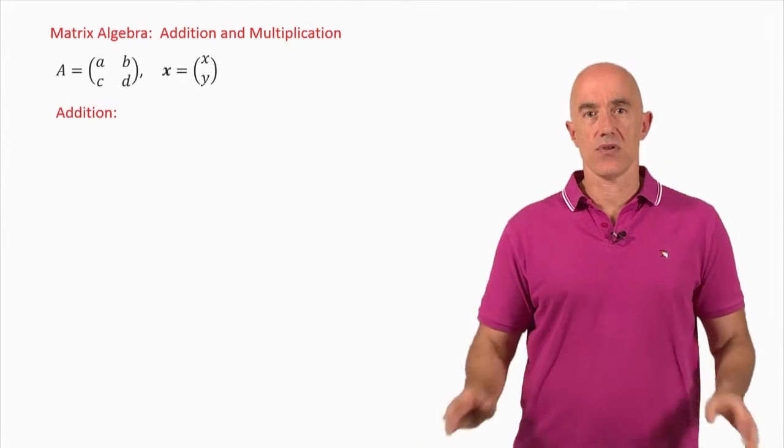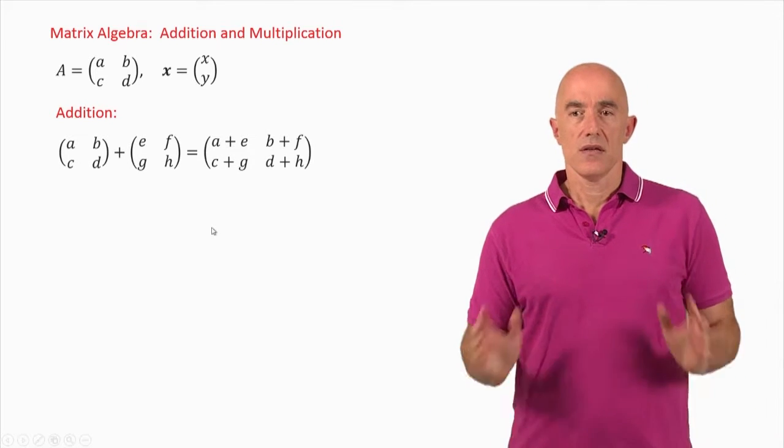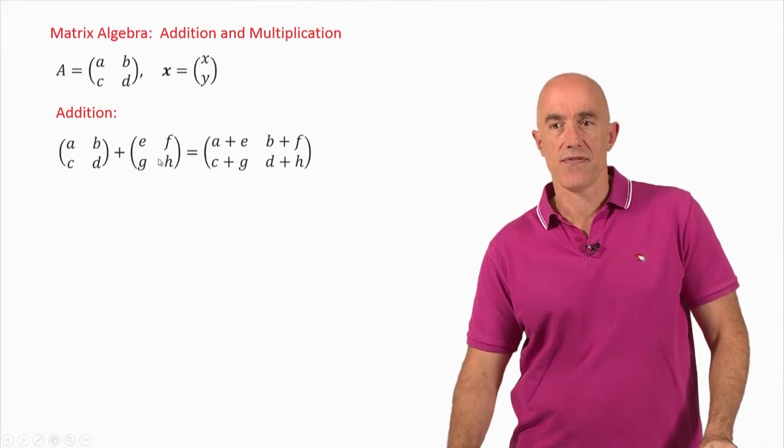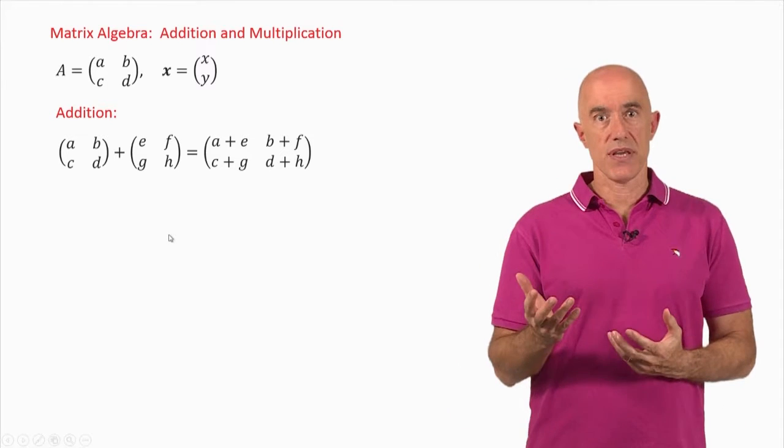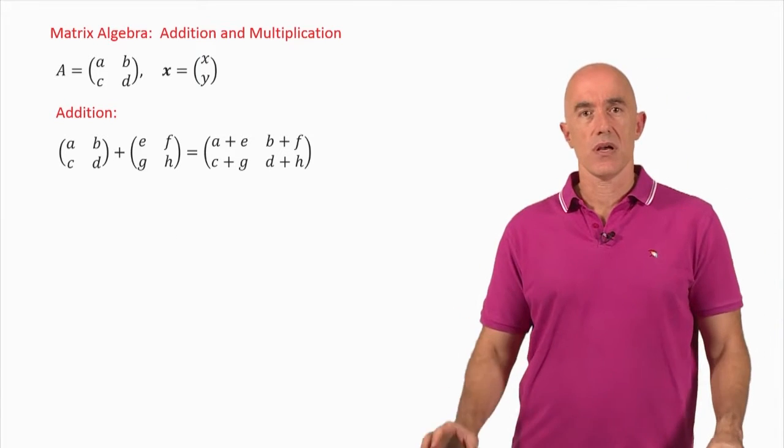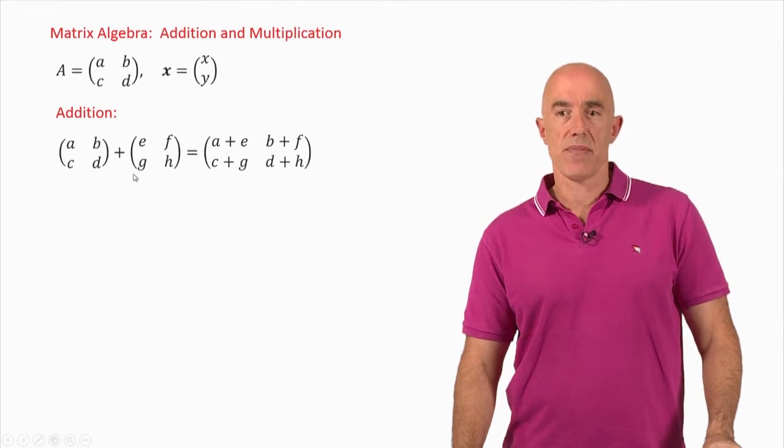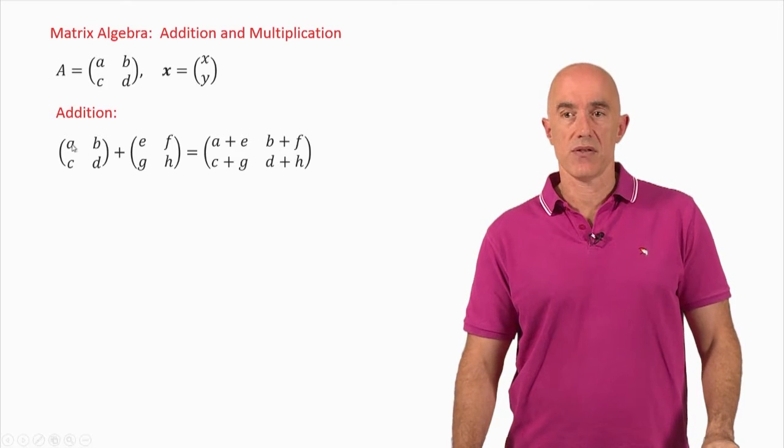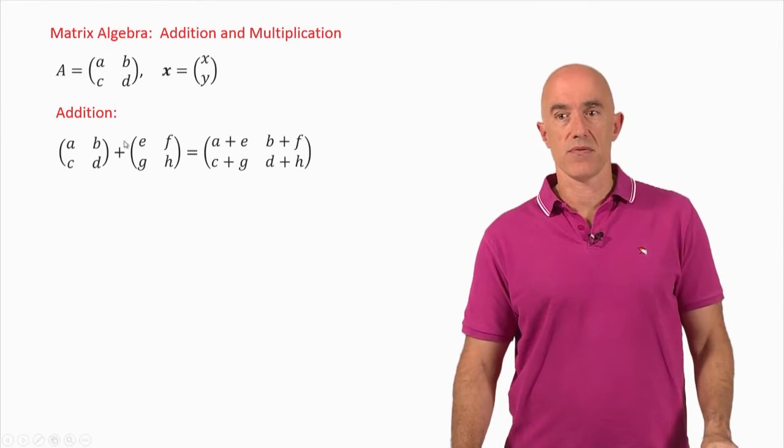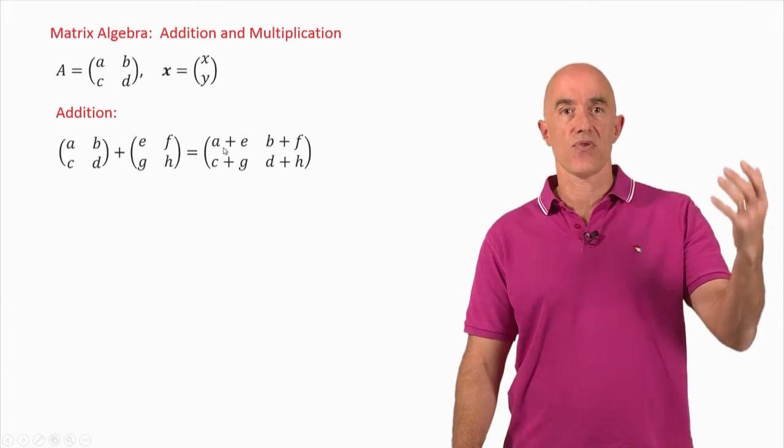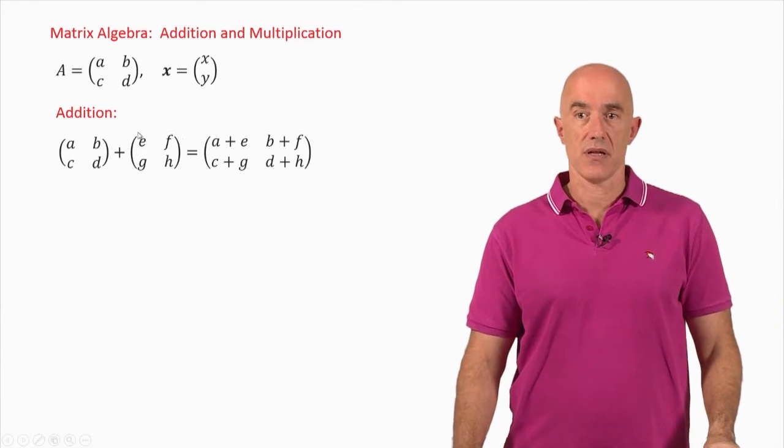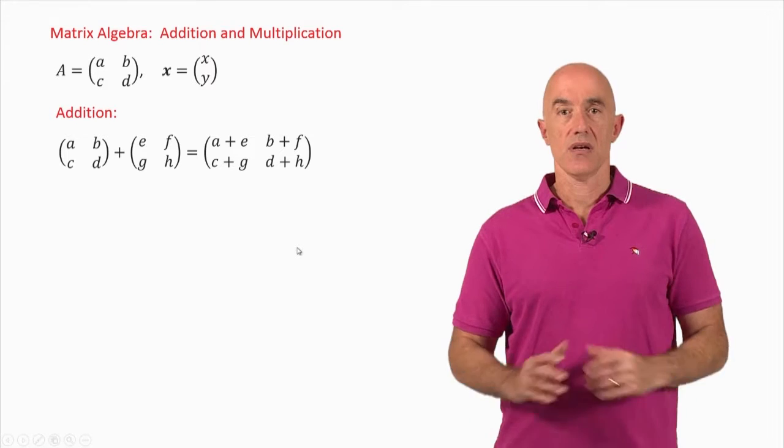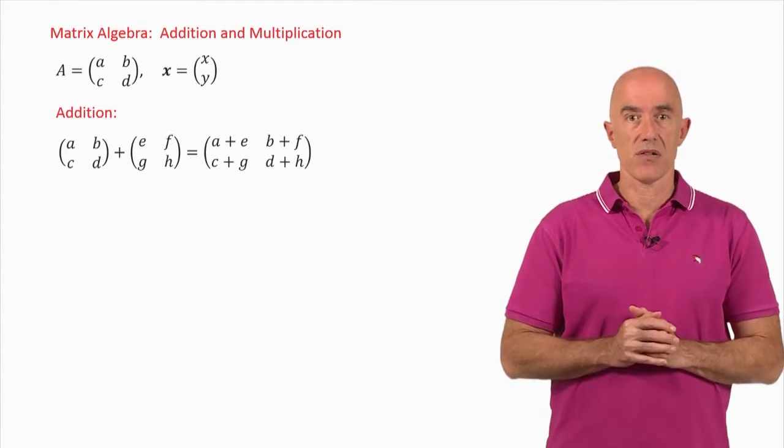So let's see how addition works. If we take two 2 by 2 matrices, A, B, C, D and E, F, G, H, and add them together, the result is very simple. It means you add element by element. In this first row, first column element, you add it to the first row, first column element: A plus E goes in the first row, first column. So A plus E, B plus F, C plus G, D plus H. Matrix addition is just element by element.